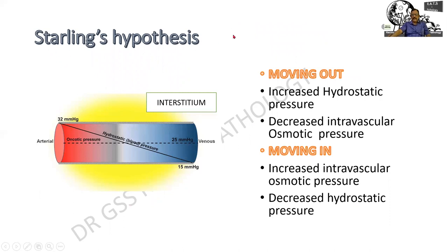There is a beautiful Starling's hypothesis that we will have to remember. It says that edema is due to an increase in hydrostatic pressure or a decrease in plasma oncotic pressure. Or it can be because of an increase in intravascular osmotic pressure and a decrease in hydrostatic pressure. Normally, when there is increased hydrostatic pressure or decreased osmotic pressure, fluid moves out. However, when there is increased intravascular osmotic pressure but decreased hydrostatic pressure, there is movement of fluid from the interstitium back into the vascular space. At the arterial end pressure is high; at the venous end it is low, and the interstitium is where fluid accumulates.